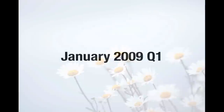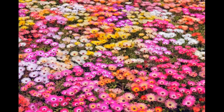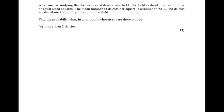The next question is number 1 from the January 2009 paper, about daisies in a field. A botanist is studying the distribution of daisies, dividing the field into equal-sized squares. The mean number of daisies per square is assumed to be three, and the daisies are randomly distributed. We need to find the probability that a randomly chosen square contains more than two daisies.